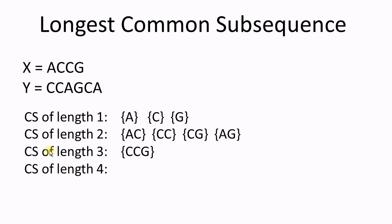Let's find the common subsequence of length 2. x has a, c — y has a and c. Note that the common subsequence doesn't have to be consecutive. x has c, c — y has c, c. x has c, g — y has c and g.